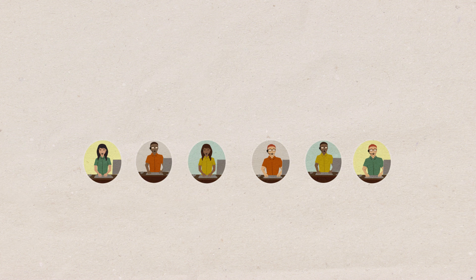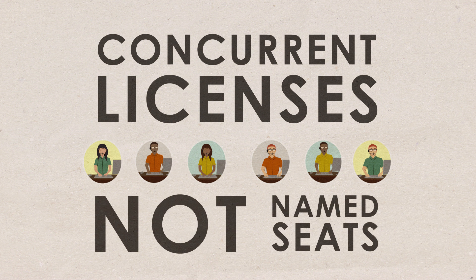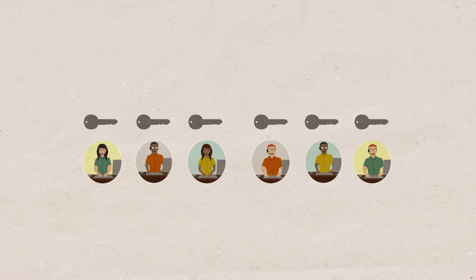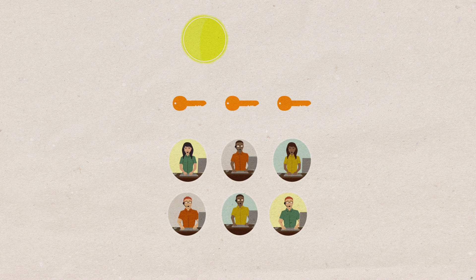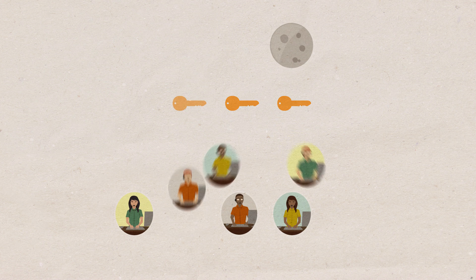Also, BOMGAR licenses are concurrent licenses, not named seats. Instead of buying a license for every rep, you only buy enough to cover your peak support load, sharing licenses across teams.